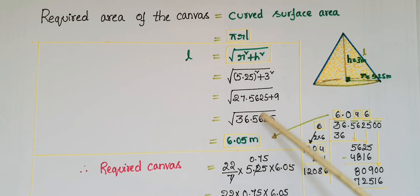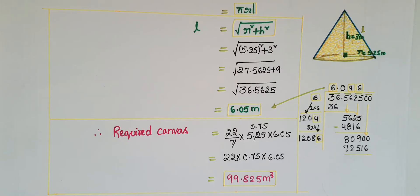Now the required canvas = πrl = (22/7) × 5.25 × 6.05 = 22 × 0.75 × 6.05. This equals 99.825 square meters.